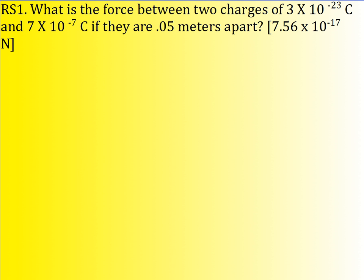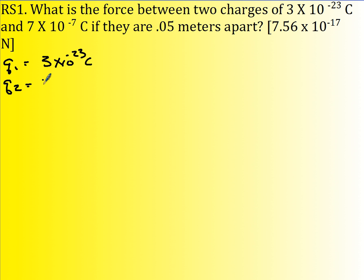What is the force between two charges of 3 times 10 to the negative 23 Coulombs and 7 times 10 to the negative 7 Coulombs if they're 0.05 meters apart? So q1 is 3 times 10 to the negative 23rd Coulombs, q2 is 7 times 10 to the negative 7 Coulombs, and the distance between them is 0.05 meters.